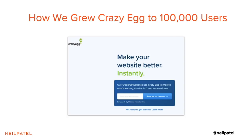Here's the thing: when we first launched Crazy Egg and released it into the market, it was new. Most people didn't know about the technology or think about anything like that. When we went out into the market, we were just like, how do we get users? How do we tell people this is a heat map technology company, because not too many people were searching for that or for usability? They don't know that they need the solution.